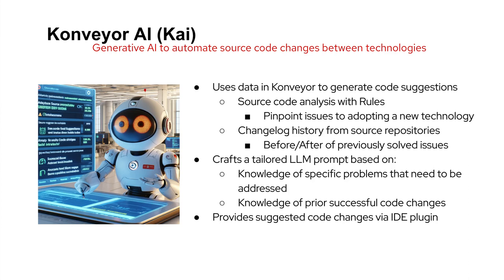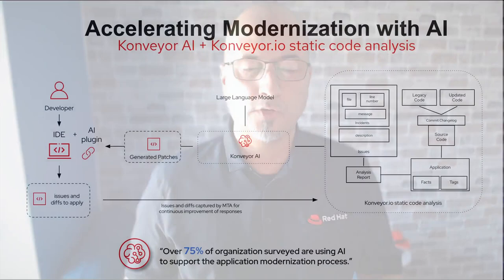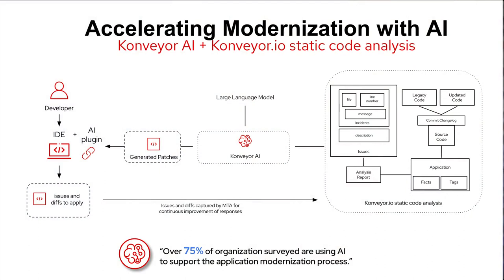On a broader scale, a developer signs in and opens their IDE, checks out the code — let's say it's an old Java EE application. Once the code is checked out, they run a static code analysis through the Konveyor.io static code analysis tool. Assuming they have the Konveyor AI extension in VS Code, they review the code and ask for code generation. Konveyor AI looks at the code analysis, creates a specific prompt, contextualizes it, and sends it via RAG into the LLM model. The LLM returns the code, which is passed back to the IDE, and the developer chooses whether to accept or reject the change.